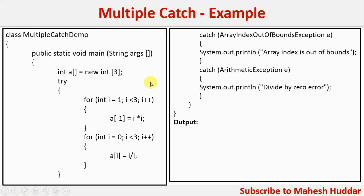We will take a very simple example to understand multiple catch blocks in Java. I have created a class called MultipleCatchDemo. Within this, I have added a main method. Here I have created an array called A — the size of this array is equal to three. These are some set of statements which may behave unusually, so I put those statements in a try block. It may generate one exception or more than one exception depending on conditions. Based on those exceptions, we have to handle them in the catch block — we have two catch statements here.